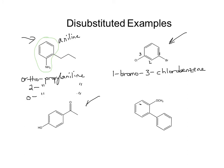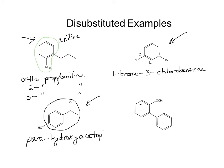Going to the third one — I have a ketone and an alcohol. I can look at this as a phenol substituted with a ketone, or as an acetophenone substituted with an OH. Which one I choose depends on which has higher priority. Ketones are higher up than OHs in functional group prioritization, so this is acetophenone with a hydroxy substituent. The arrangement is para, so: para-hydroxy-acetophenone, or 4-hydroxy-acetophenone.